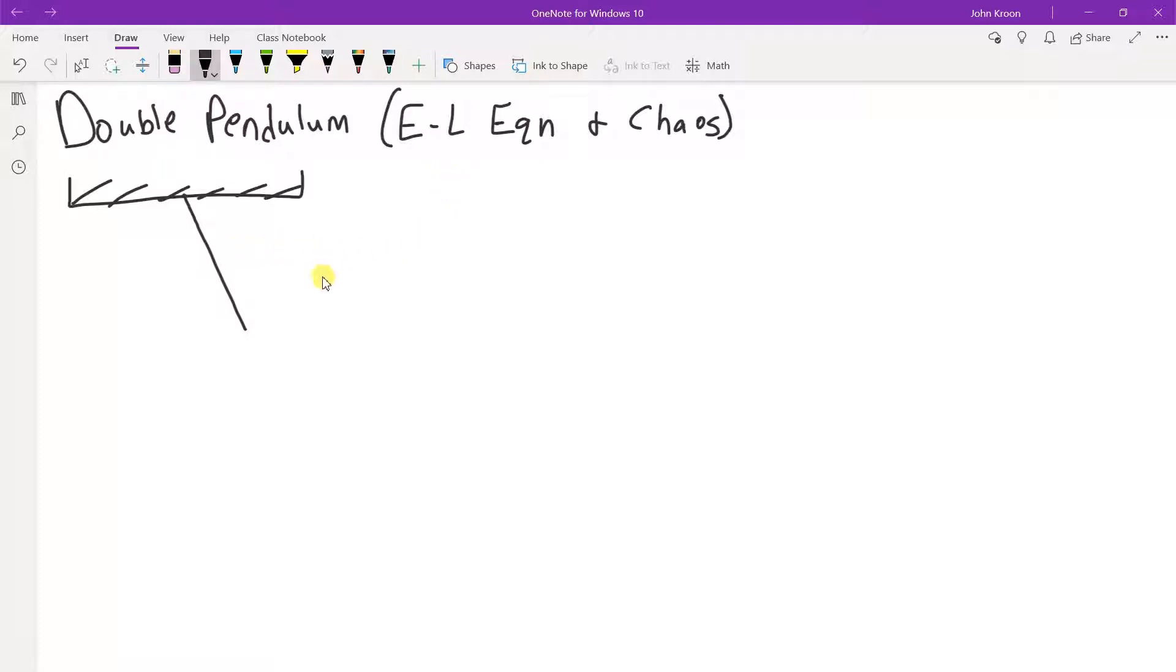And so we're going to have our first pendulum here with a mass m1 at the end of it. Now right here, if we stop here, it's the simple pendulum, non-double pendulum, and it'd be pretty straightforward to get a solution of the dynamics of this swinging mass.